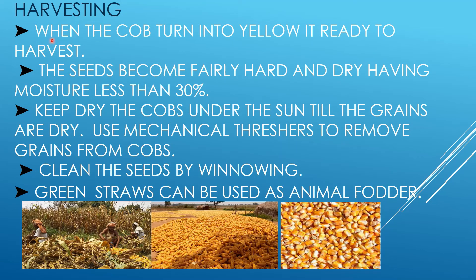For harvesting, when the crop turns yellow it is ready to harvest. The seeds should be fairly hard and dry with moisture less than 30%. After harvesting, keep the cobs dry under sunlight until grains are dry. Use mechanical threshers to remove grains from the cobs, then clean the seeds by winnowing to remove particles. Green straws are mainly used for animal fodder.